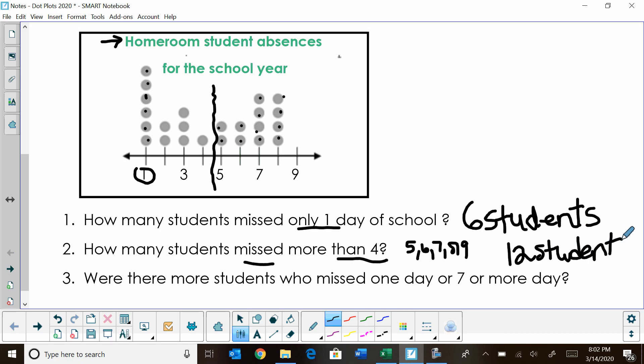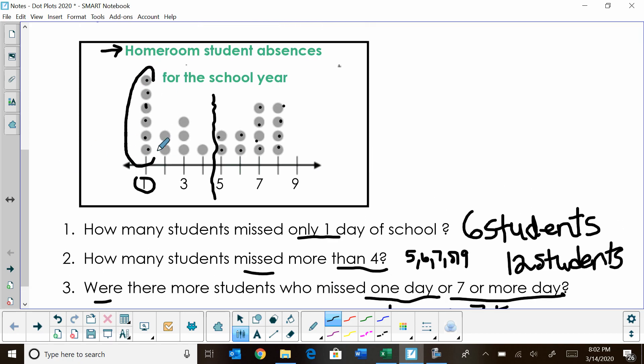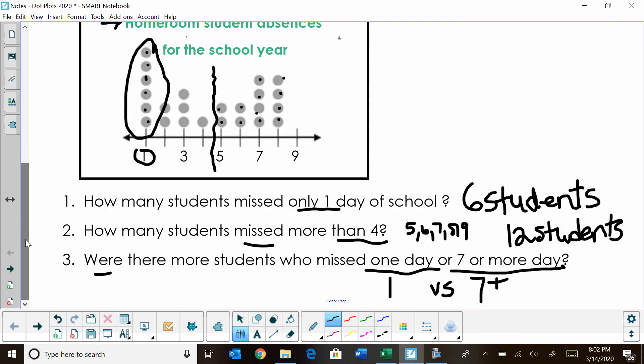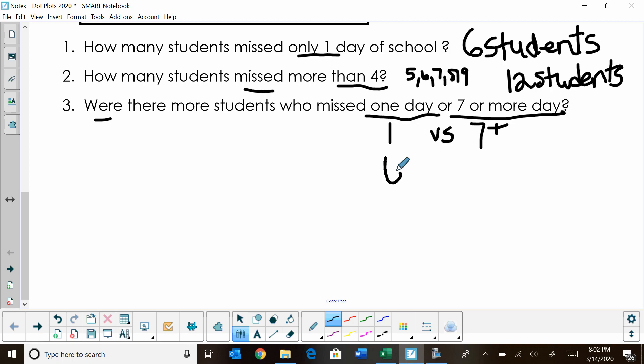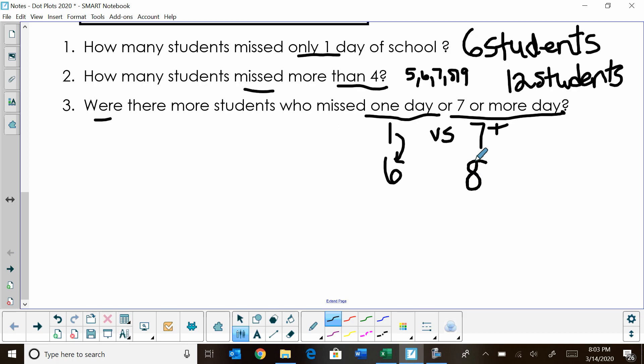Now let's read the last question. Were there more students who missed one day or seven or more days? So we need to compare how many students missed one day versus seven or more days. We've already counted the students that missed one day and that was six students. Now let's look at seven or more. So seven or more really just represents seven and eight. How many students missed seven and eight days of school? We have one, two, three, four, five, six, seven, eight. We have eight students that have missed seven or more days of school.